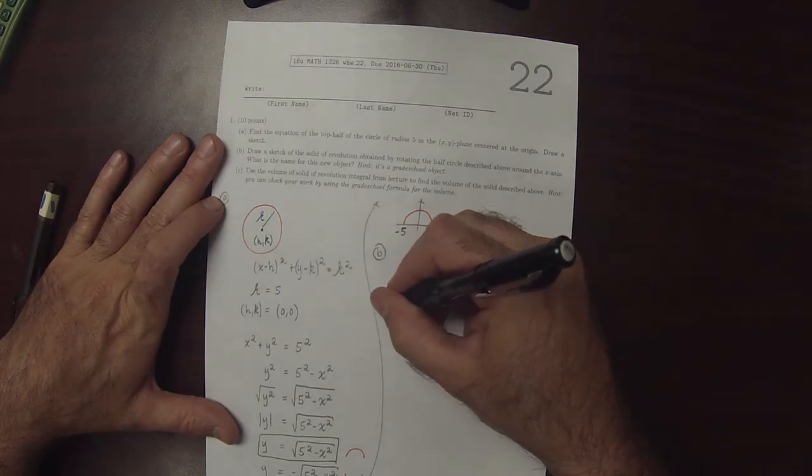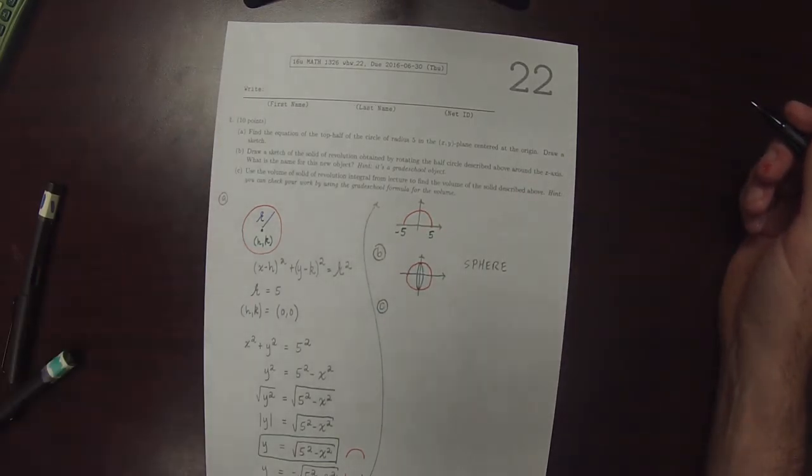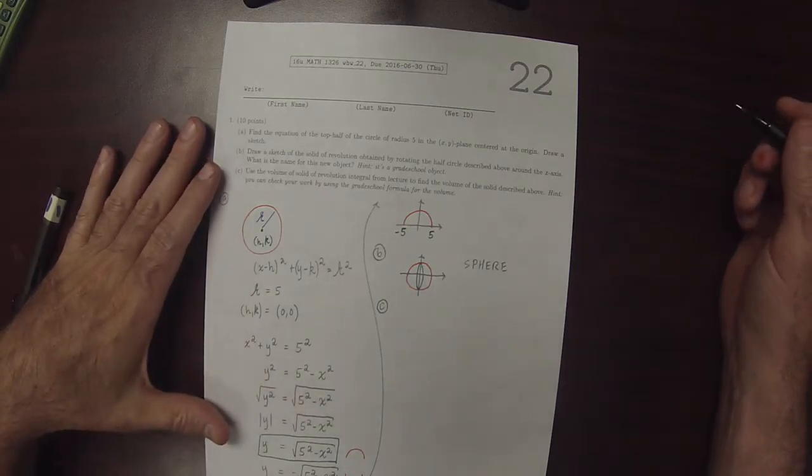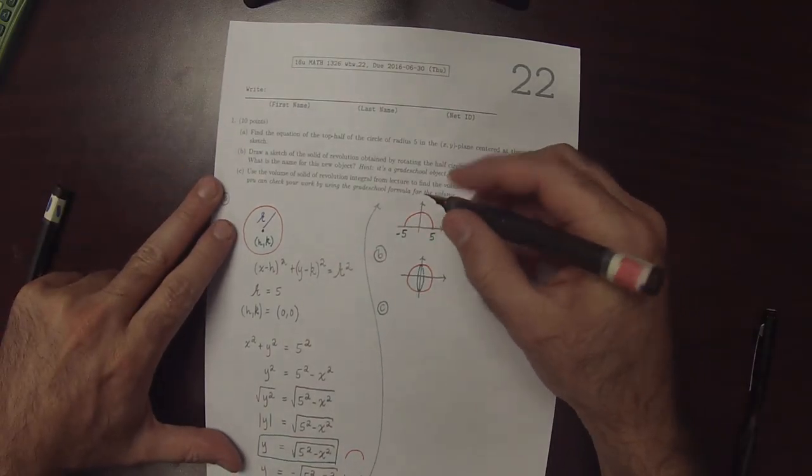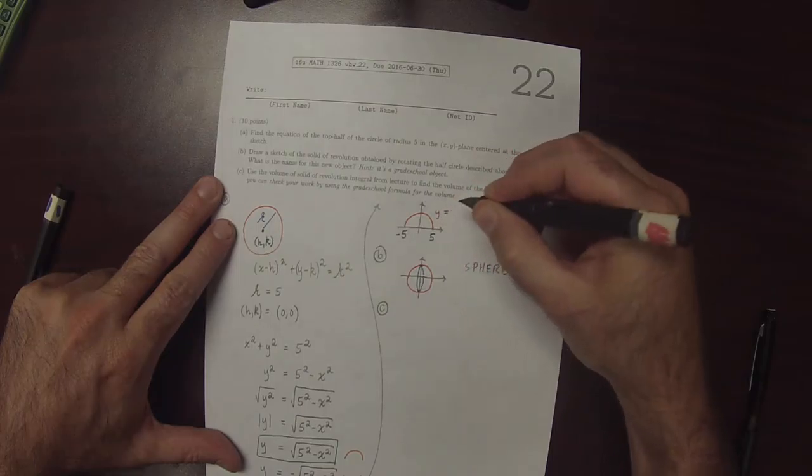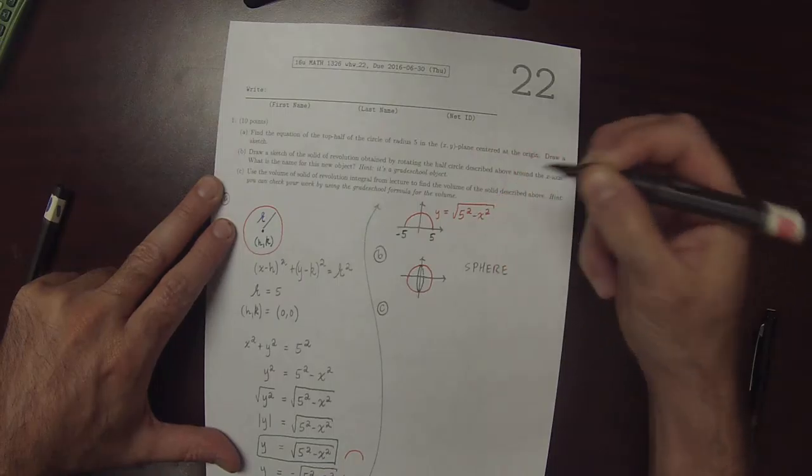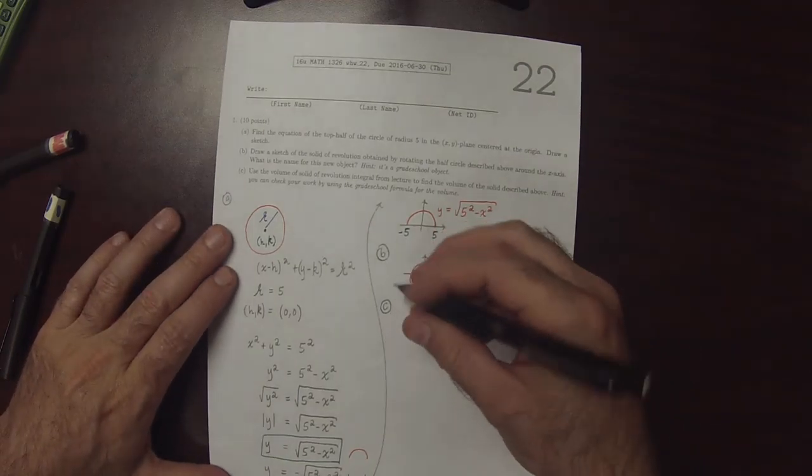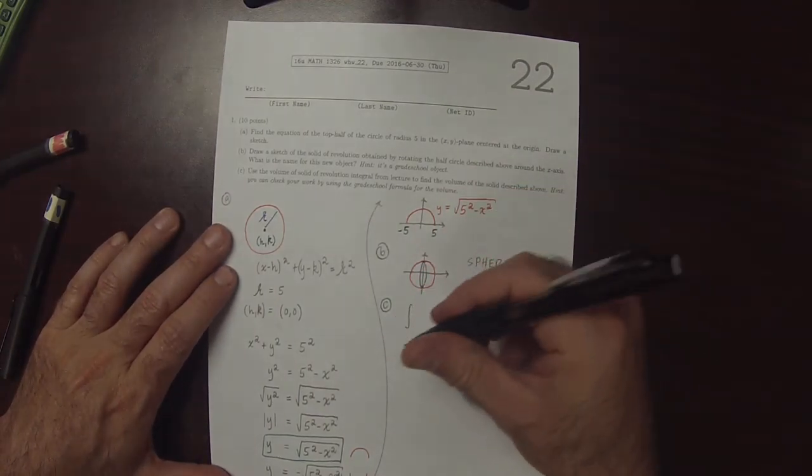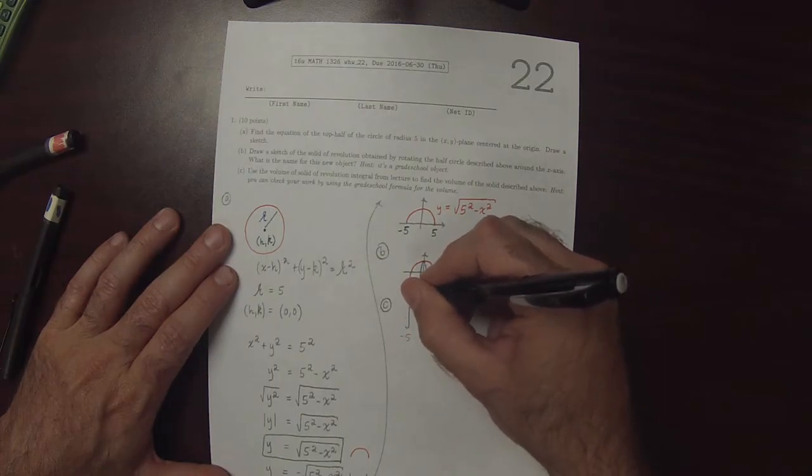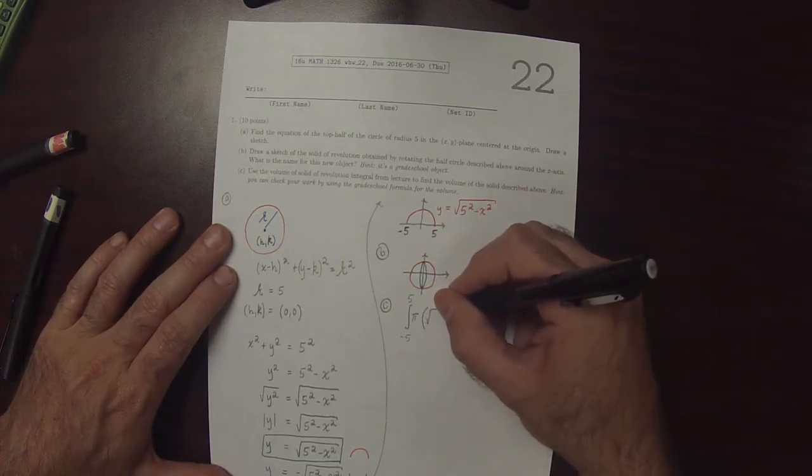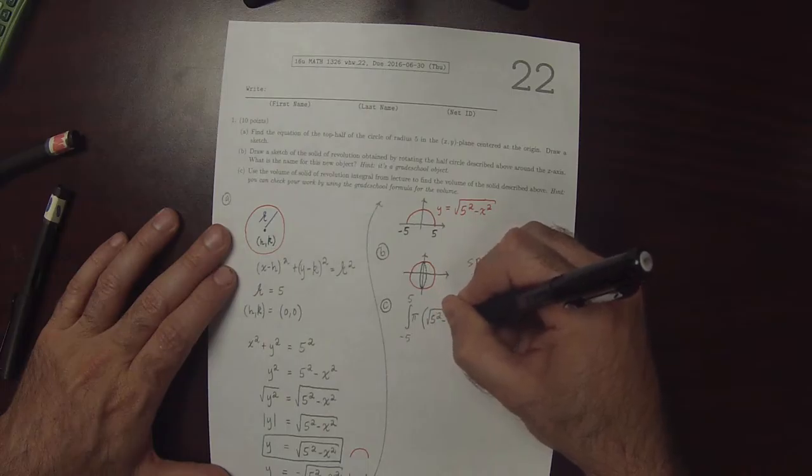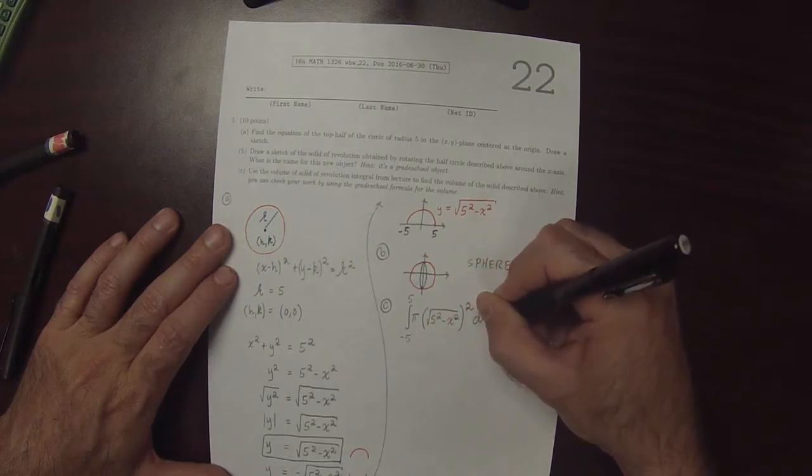And C. Use the volume of a solid of revolution integral from lecture to find the volume. Okay, so then this equation here is y equals the square root of 5 squared minus x squared. And the volume integral is telling us that that should be negative 5 to 5 of pi and then this square root 5 squared minus x squared squared dx.